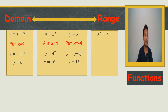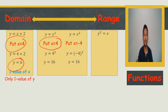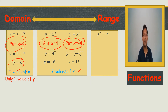So two different values of x give the same value of y — both give 16. In the first equation, one value of x gives one value of y. But in y = x², two different values of x give only one value of y. That is an important distinction.